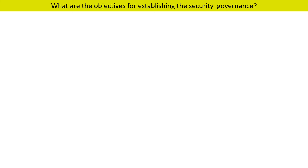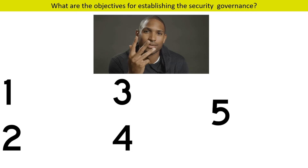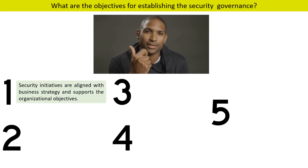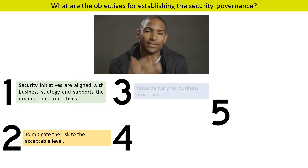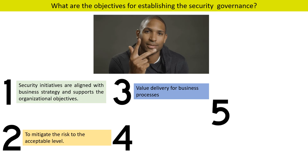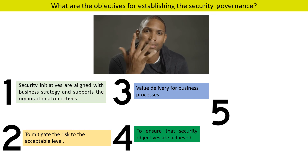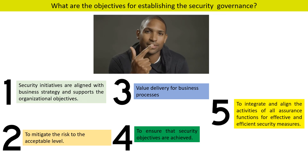The question arises: what is the requirement for having a security governance — in other words, what are the objectives of security governance? From an exam perspective, you need to remember five objectives of security governance. First, to ensure that security initiatives are aligned with the business strategy. Second, to mitigate risk to an acceptable level. Third, security governance should ensure that security processes are providing value to the business processes. Fourth, to ensure that security objectives are achieved. Fifth, to integrate and align the activities of all assurance functions for effective and efficient security measures.